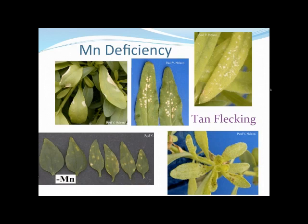With manganese deficiency, we get tan flecking of the young tissue. Necrosis comes in pretty quickly, much like with potassium, but this time it's at the top of the plant, not the bottom. You can see in these photos a kind of necrosis on the leaf margins and across the leaf blade in a somewhat random pattern.